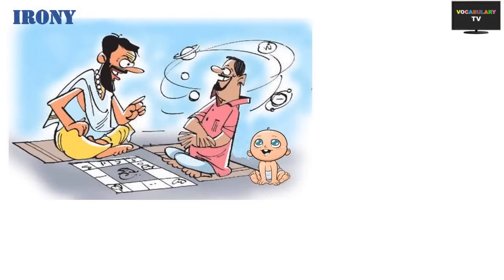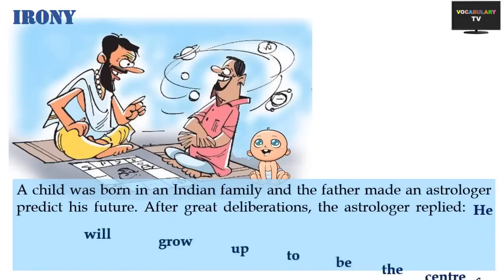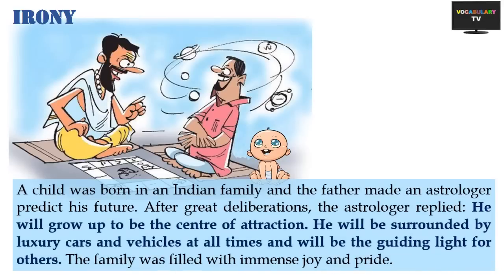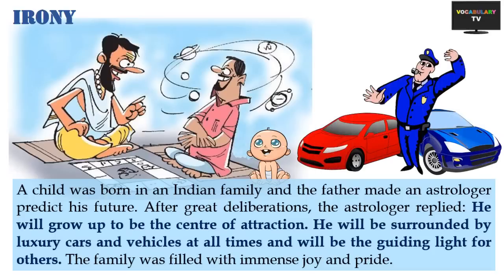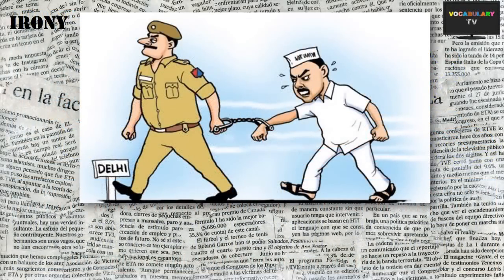When there is a mismatch between what is expected and what happens in reality, it is called situational irony. For example: a child in an Indian family had his future predicted by an astrologer who said he would be the centre of attraction, surrounded by luxury vehicles, and a guiding light for others. The family was filled with joy and pride — but the irony is that the child grew up to be a traffic police inspector, surrounded by cars and guiding traffic.